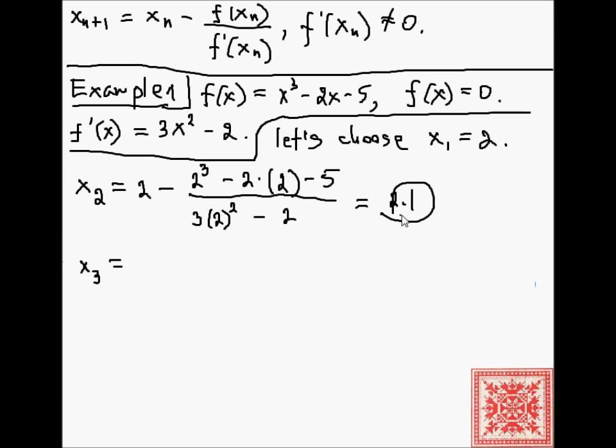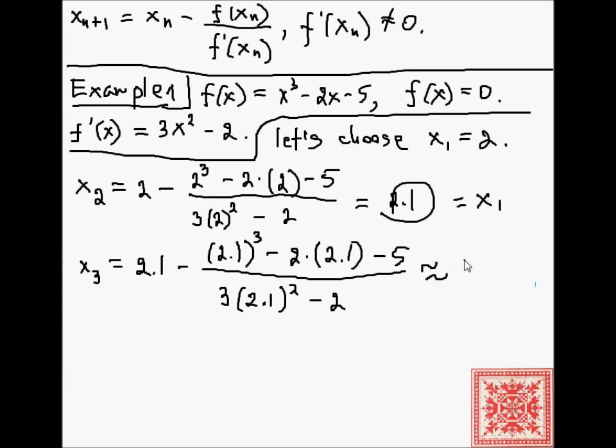Now, the third guess is equal to, this is our previous guess, x2. So, 2.1 minus 2.1 cubed minus 2 times 2.1 minus 5 over 3 times 2.1 squared minus 2. And this says approximately 2.0946.